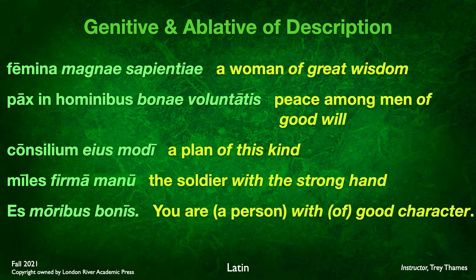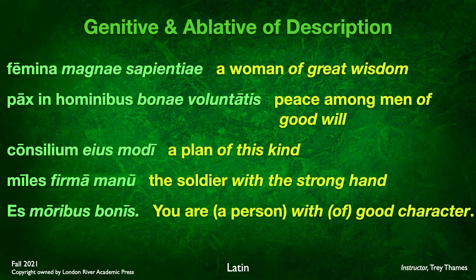One final example — actually a full sentence: es moribus bonis. You are a person with good character. We have to supply 'a person' since the subject is implied. These are both ablative, modifying the inferred 'you.' All these examples describe the character of the noun being modified: a woman of great wisdom, men of goodwill, a plan of this kind, a soldier with a strong hand, a person of good character.